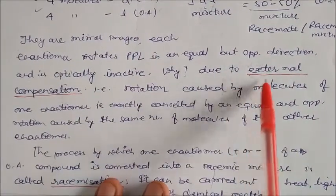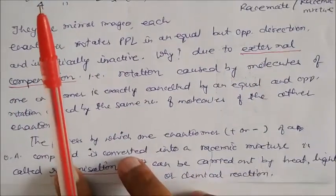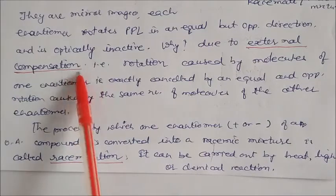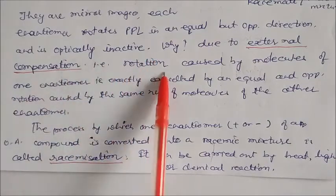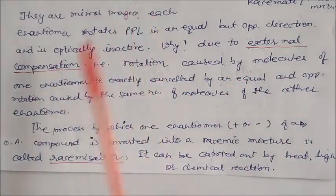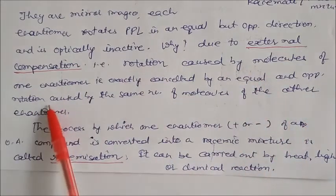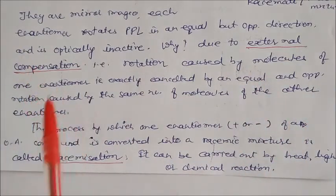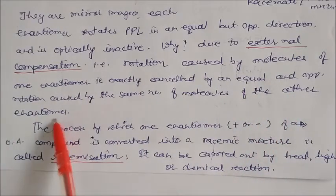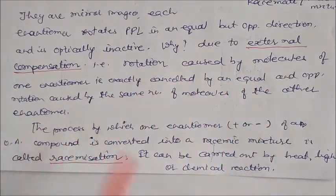So they are mixed — they are mirror images. Each molecule, whether D or L, rotates the plane polarized light in an equal but opposite direction, so it is optically inactive. We can say this is due to external compensation — the rotation caused by the molecules of one enantiomer, like D, is exactly cancelled by the equal and opposite rotation of the L, by the same number of molecules of the other enantiomer. So rotation-wise they are equal and opposite.